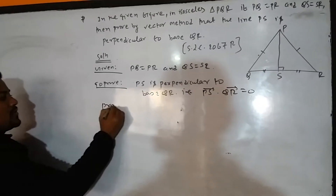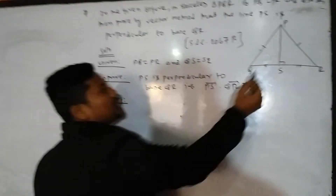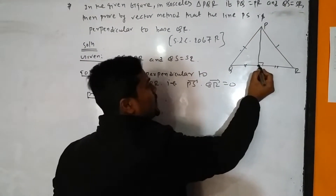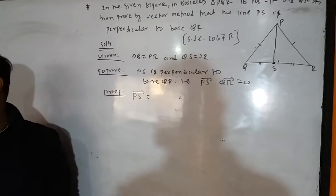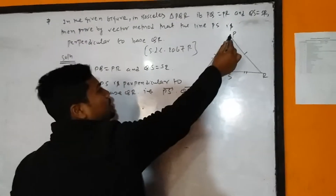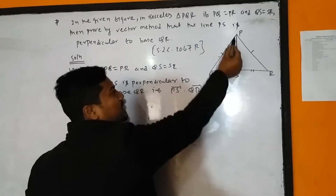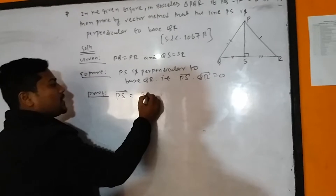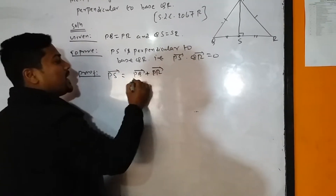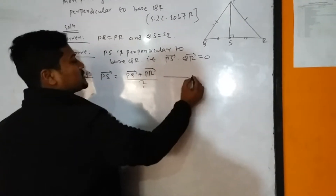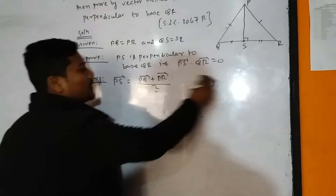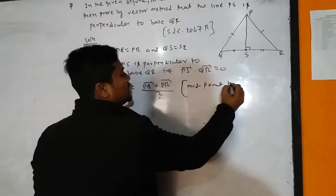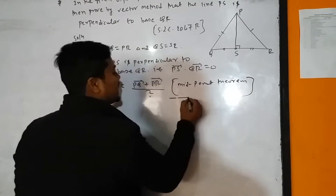This is very easy. Proof: First, take PS vector. PS vector equals what? Since S is the midpoint, PS is the median. By the midpoint theorem, PS vector is equal to PQ vector plus PR vector divided by 2. Call this equation 1, using the midpoint theorem.